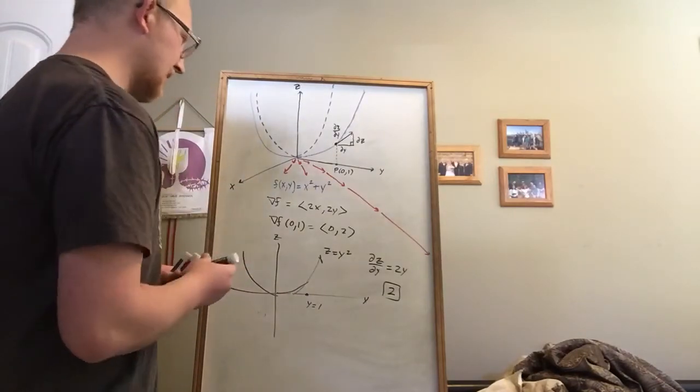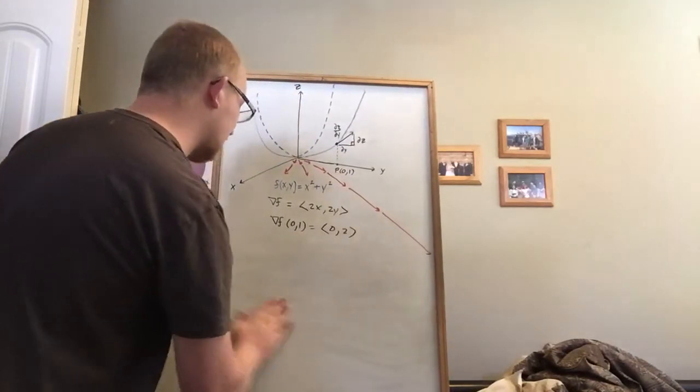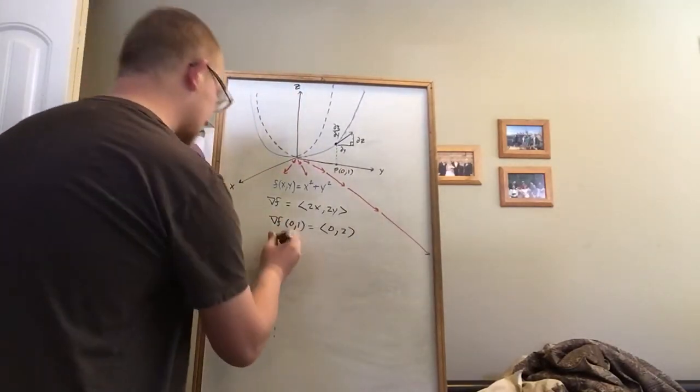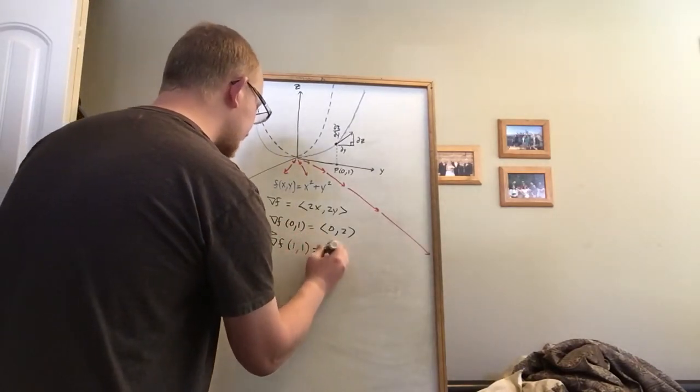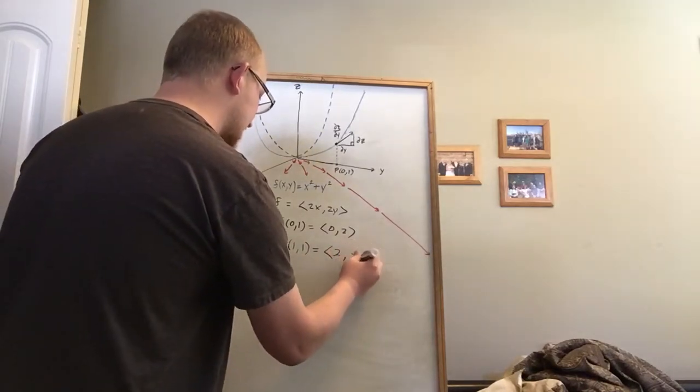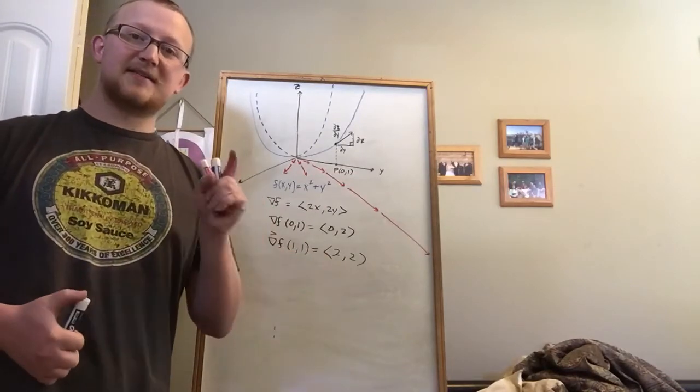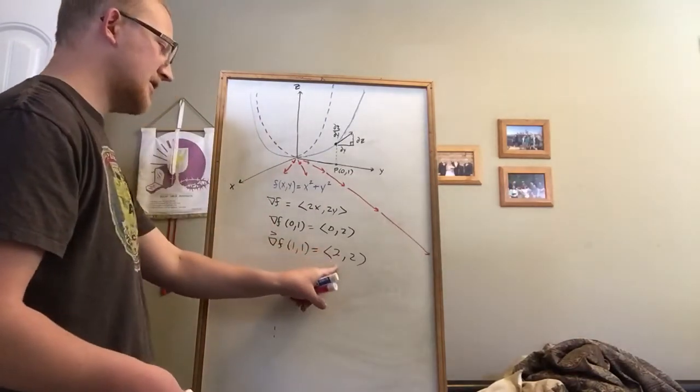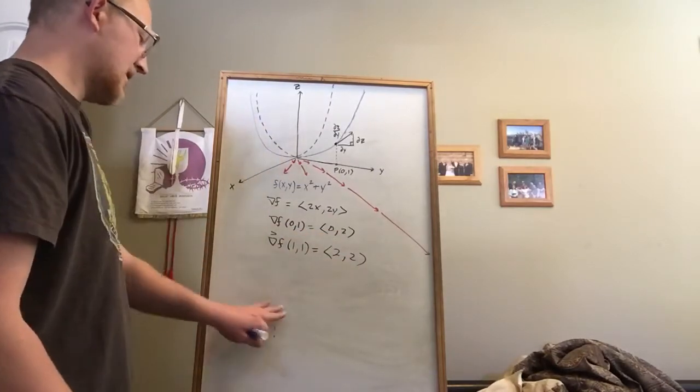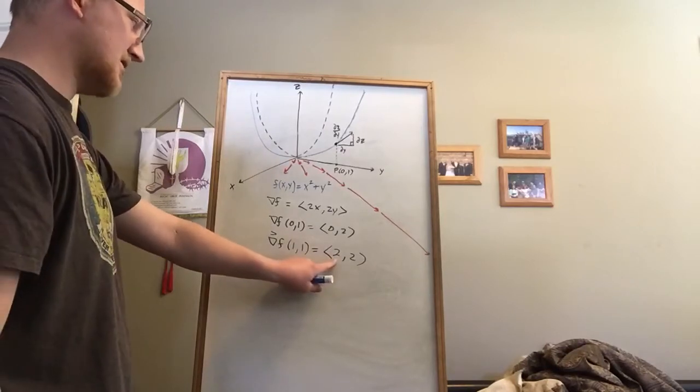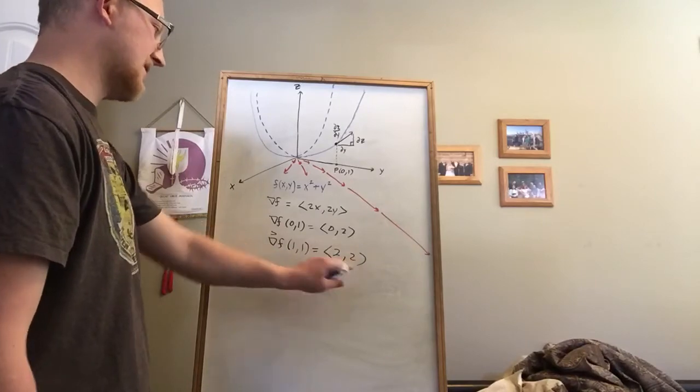So for example, if I picked, let's say instead of just something with a y component, let's say I picked my point (1, 1), and now I would get 2 and 2 when I plugged it into my gradient, which means that the fastest descent is a combination of the rate of change in the x direction and the rate of change in the y direction. And so in fact, this is the rate of change in the x direction for fastest ascent at the point (1, 1), and this is the fastest ascent in the y direction.